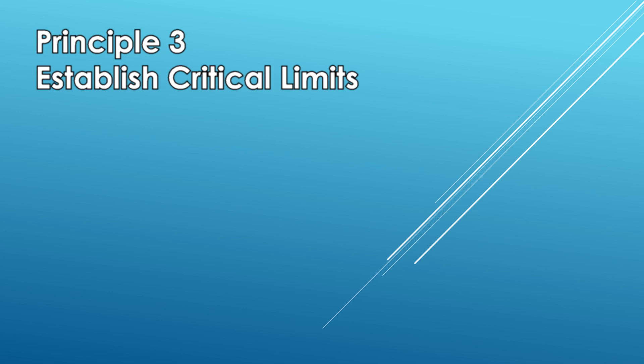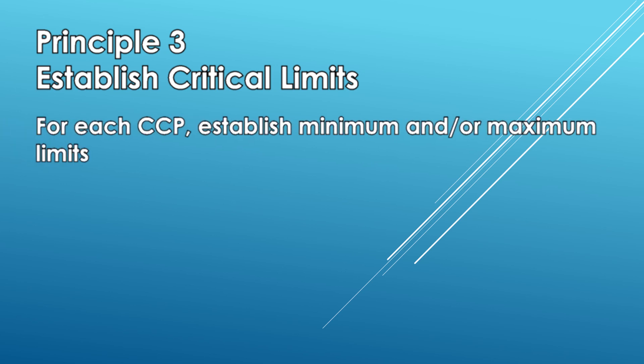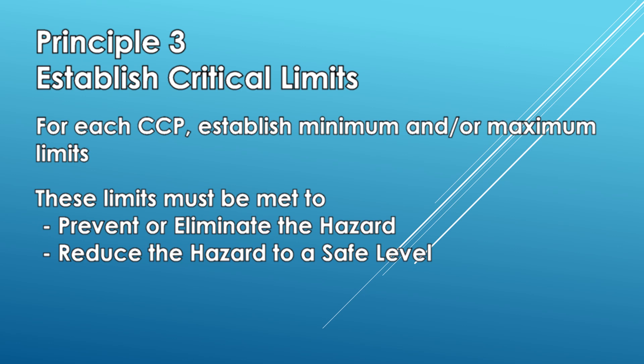Principle 3 — Establish critical limits: determine critical limits for each CCP. A critical limit's purpose is to determine if a potential physical, chemical, or biological hazard is within an acceptable value or not. If these limits are exceeded, corrective actions need to be taken to prevent or eliminate the hazard, or reduce it to a safe level.